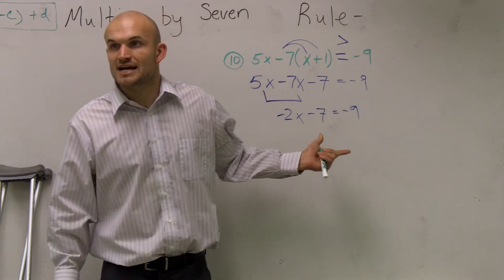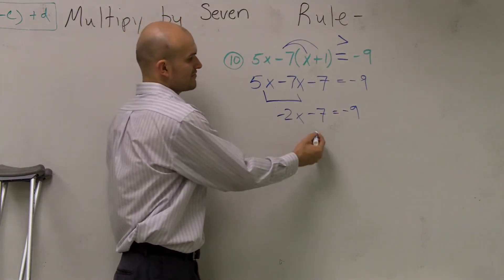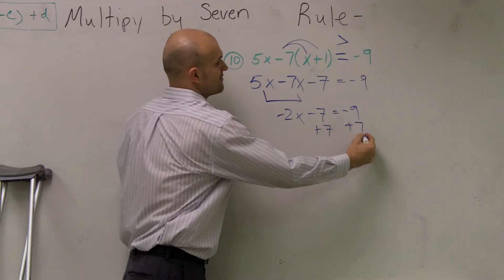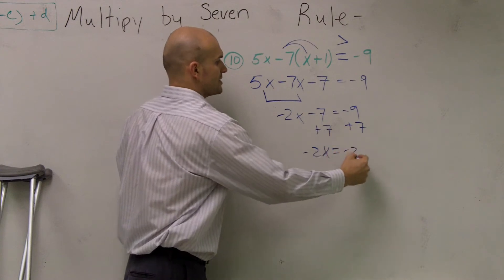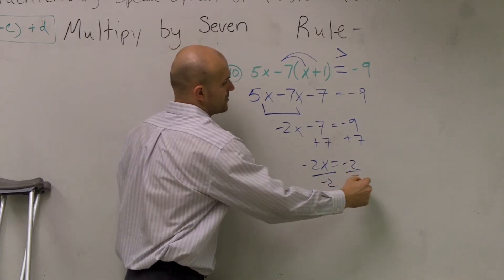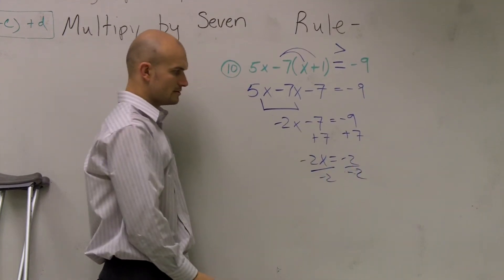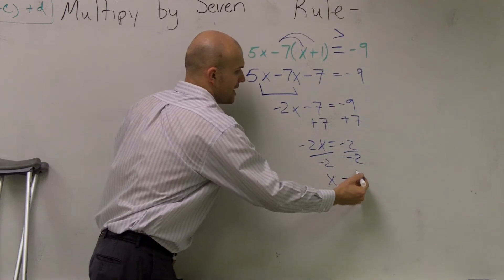Now it's like your last worksheet, which is on two-step equations, right? So now just undo what's happening to your variable. So I undo subtraction by adding a 7. Negative 2x equals negative 2. Then divide by negative 2. That looks really weird. Right? So then we get x is equal to a positive 1.